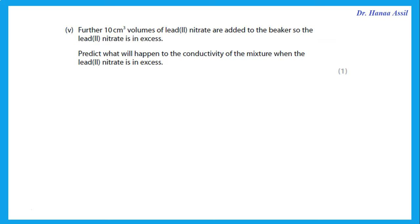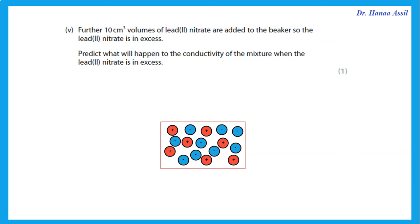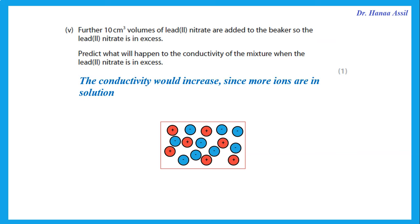When further 10 cm³ volumes of lead nitrate are added so it becomes excess, there are more and more lead nitrate ions not being used. These remain in solution, not forming precipitates, so the number of ions in solution increases and conductivity would increase.